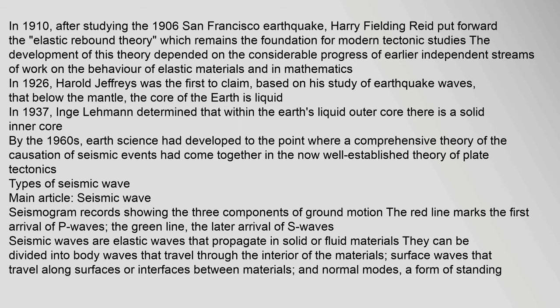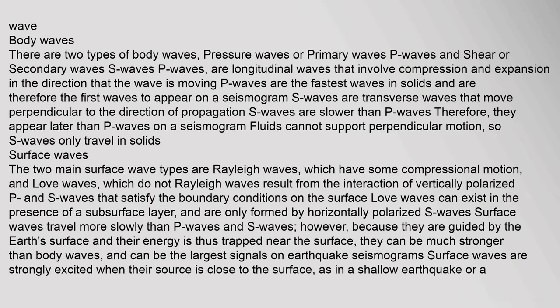Seismic waves are elastic waves that propagate in solid or fluid materials. They can be divided into body waves that travel through the interior of the materials, surface waves that travel along surfaces or interfaces between materials, and normal modes — a form of standing wave. Seismogram records show the three components of ground motion: the red line marks the first arrival of P waves, and the green line the later arrival of S waves.